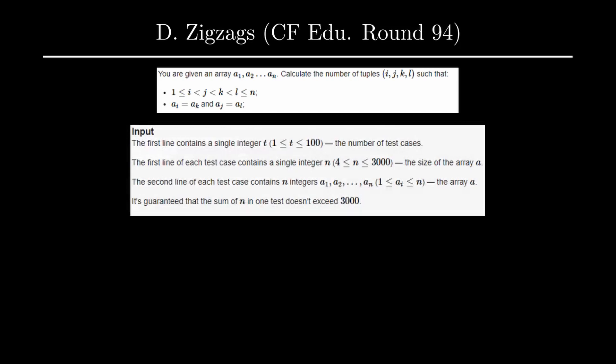Out of the four things, it would be enough to just get two of them. If you consider the numbers in the tuple as x, y, x, y, then what we'll do is brute force over the y and x of indices j and k, and then a[k] and a[l] will be the same as a[i] and a[j] respectively. Then we count the number of x's before j and the number of y's after k, and multiply both of those.